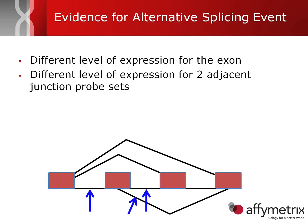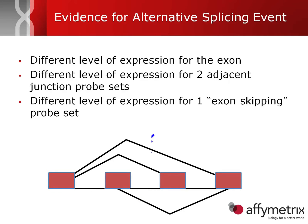So if the exon is spliced in, then two of these junctions should also be included. In addition, you can look at the differential expression for one of the exon skipping events, or overhead probesets. If we're looking at this exon here, you can see these probesets go over the top of it. So if this exon is spliced in, then one of these two overhead junctions should be decreased.